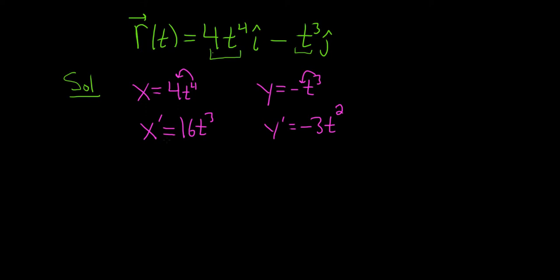So again, it's smooth if these are continuous, which they are, and they're not both zero at the same time. So in other words, we're going to find out where it's not smooth by setting them both equal to zero.